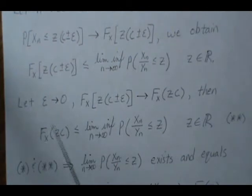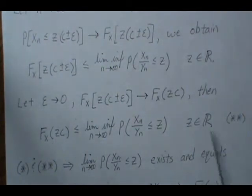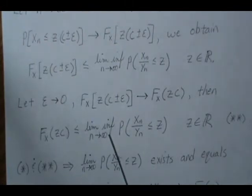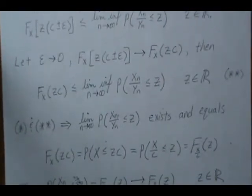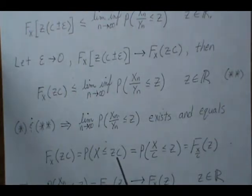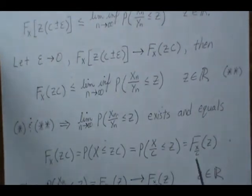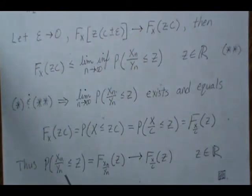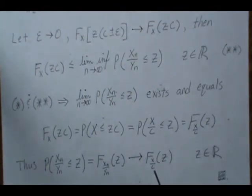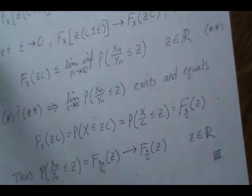Combining (*) and (**): F_X(ZC) ≤ liminf ≤ limsup ≤ F_X(ZC), so all terms are equal. This means the limit of P(Xn/Yn ≤ Z) exists and equals F_X(ZC). Since P(X ≤ ZC) = P(X/C ≤ Z), this is exactly F_{X/C}(Z). We have shown the distribution function of Xn/Yn converges to the distribution function of X/C.